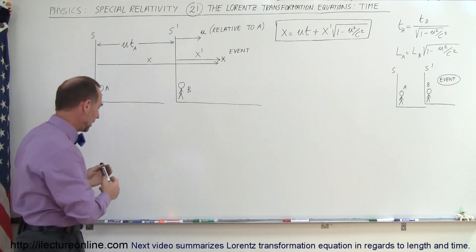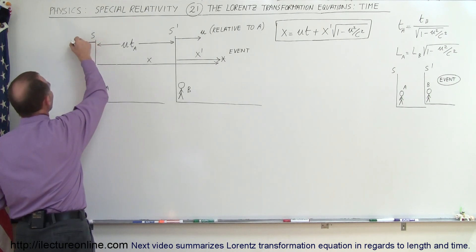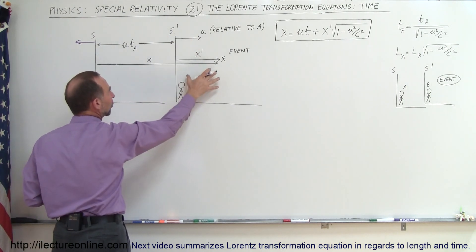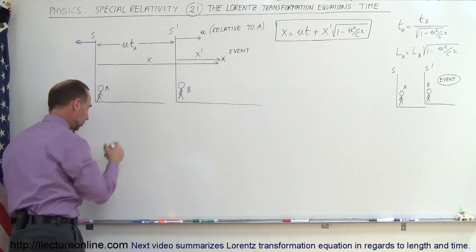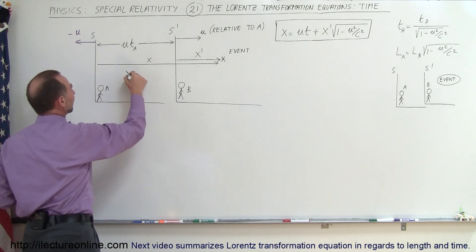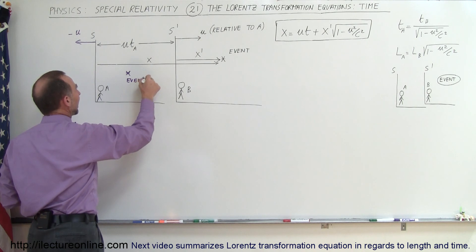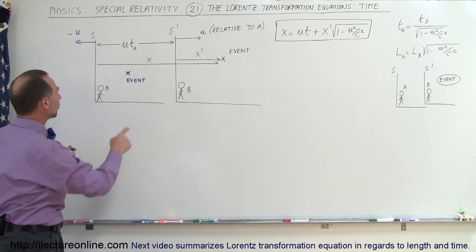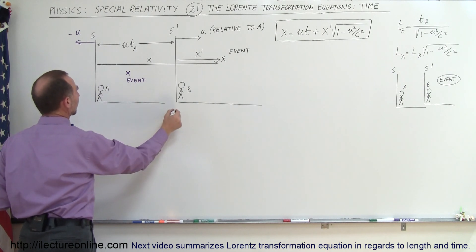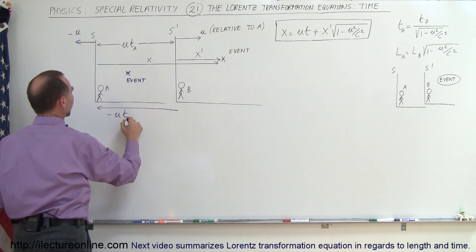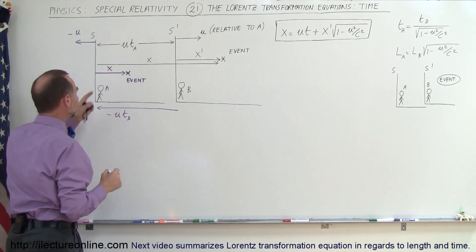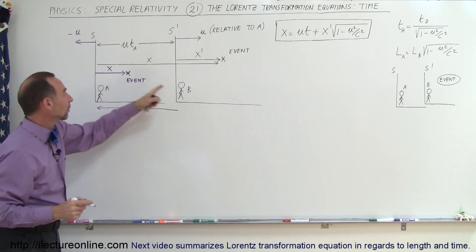Now we're going to turn things around. We're going to assume for a moment that S prime is the stationary reference frame, so observer B is in reference frame S prime, which is now stationary. According to B looking back at reference frame S, that frame appears to be moving backwards at a velocity of minus u. If we place an event in reference frame S, the distance to this event according to B would be minus u times t as observed by B, plus the distance to the event as observed by A, which is x — adjusted because what A sees will differ from what B sees.